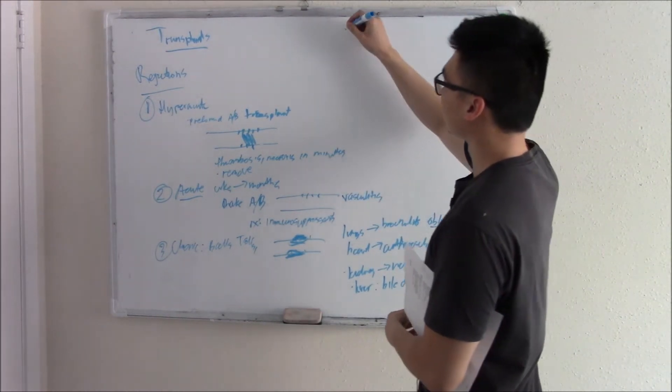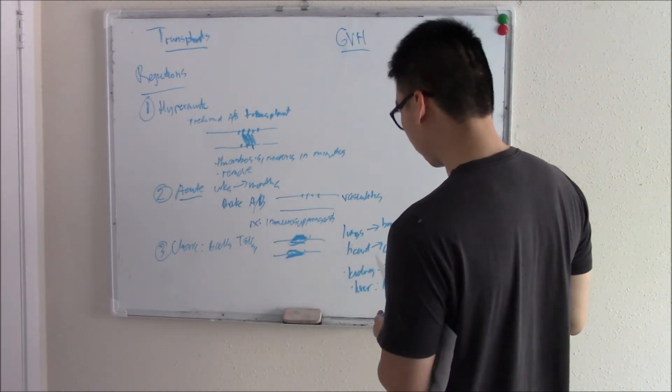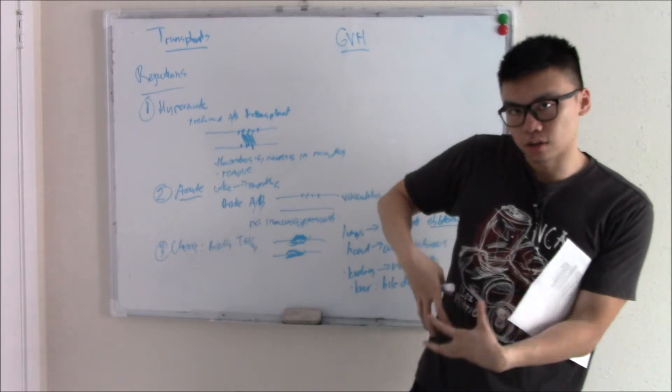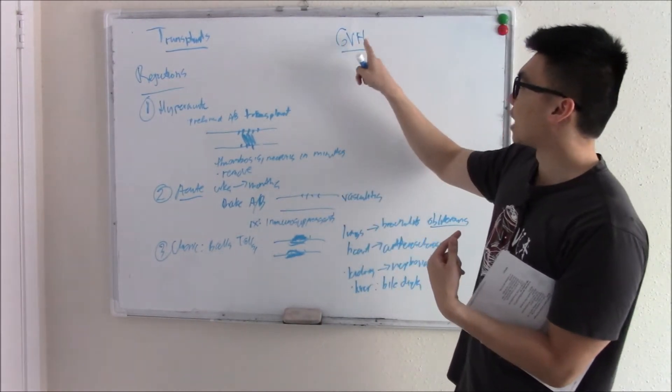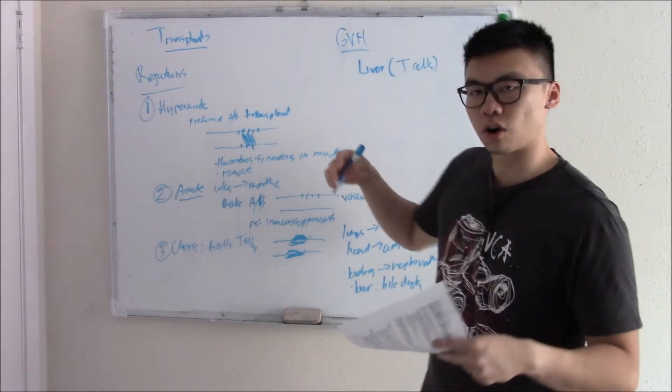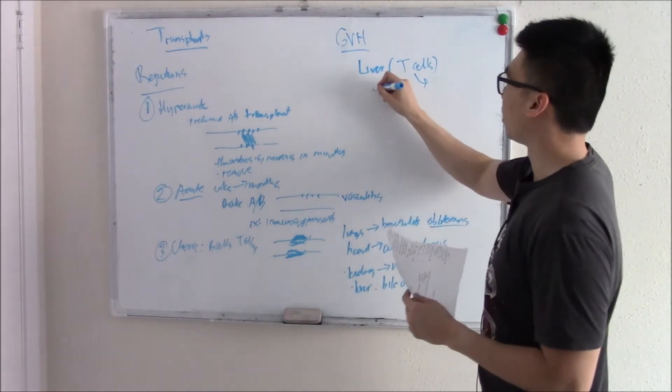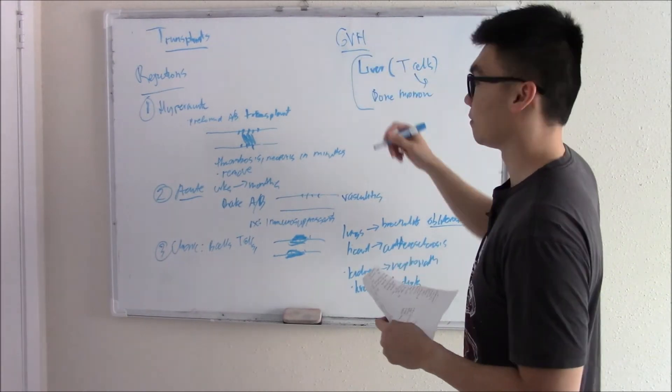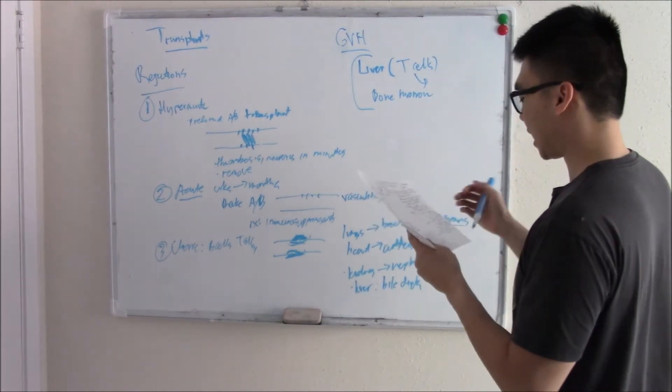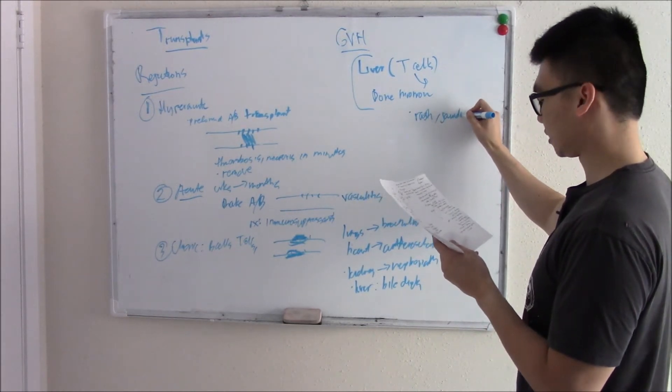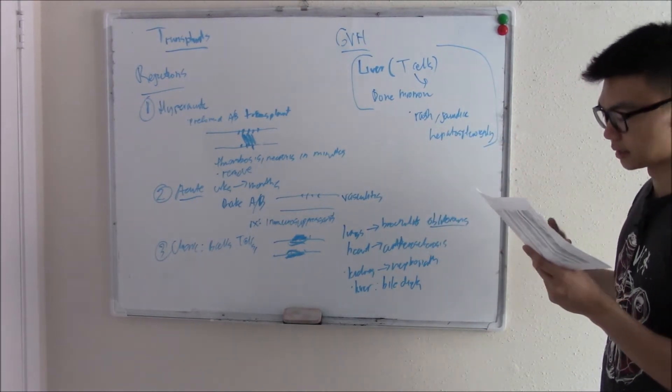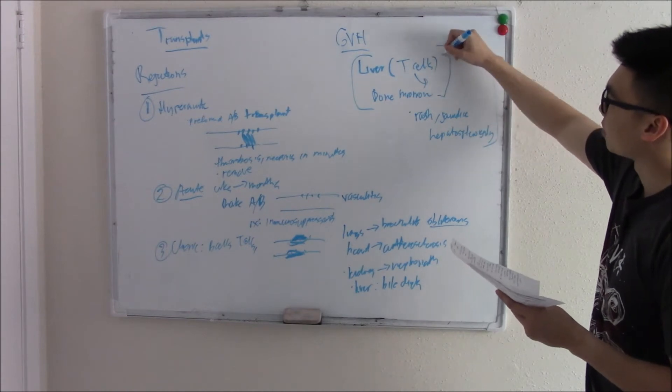Our last type of rejection is something we call graft-versus-host. This is a special one because in these three, we talked about how your body is making antibodies against the transplant. You're attacking your own transplant. Here, the transplant is attacking you. The graft is attacking the host. So if I transplant a liver, that liver might have a ton of T cells. As soon as I transplant that liver, all those T cells go into my blood, start attacking my body or bone marrow. Something these have in common is that they're very vascular, full of lymphocytes. So you transplant that thing, they'll leak out and attack your body.